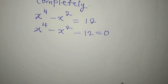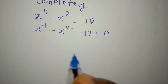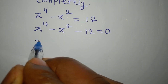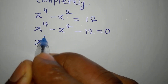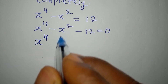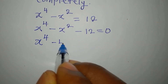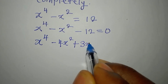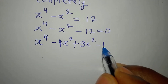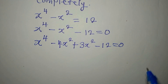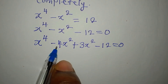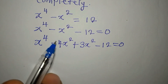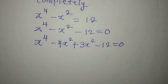From here, what do we do? We will try to factorize what we have on the left-hand side. So I write x to the power of 4, and in place of the middle term I'm going to write minus 4x squared, then plus 3x squared minus 12, equals 0. Remember that minus 4x squared plus 3x squared will still give us minus x squared.